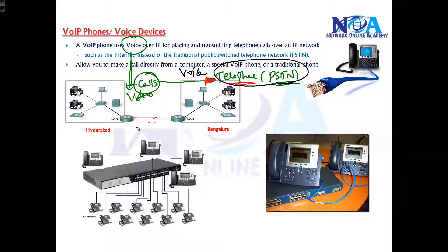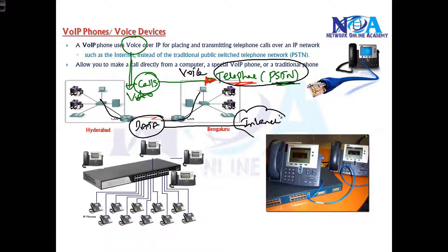So you have a separate network which is built for voice, and a separate network which is built for data. Data again uses the internet, or maybe your private WAN connection connecting branch offices — that is your data network.